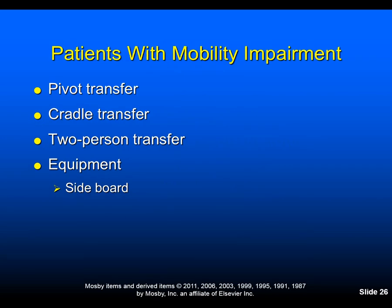For patients with mobility impairment, you can utilize various transfer methods: the pivot transfer, the cradle transfer, the two-person transfer, and equipment such as the slideboard. The slideboard forms a bridge between the wheelchair and the exam table — the table and chair must be at about the same height to slide the person over. A two-person transfer or pivot transfer might work better depending on the situation.